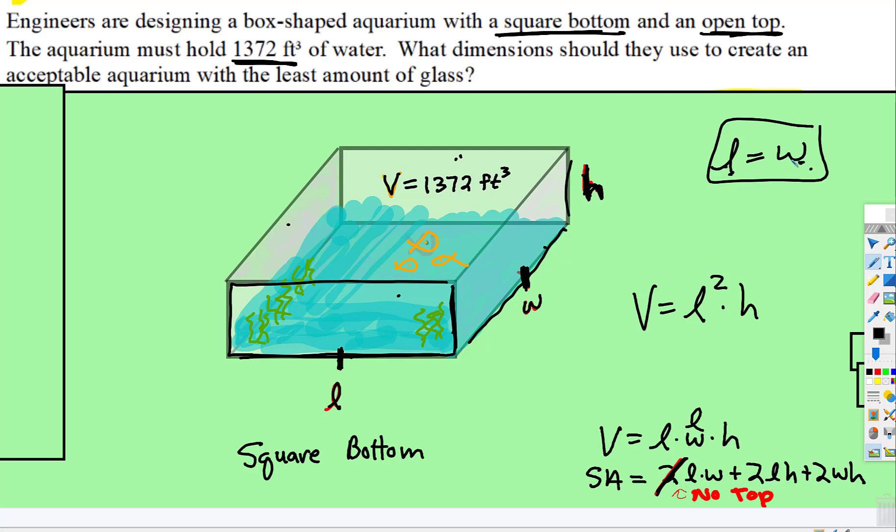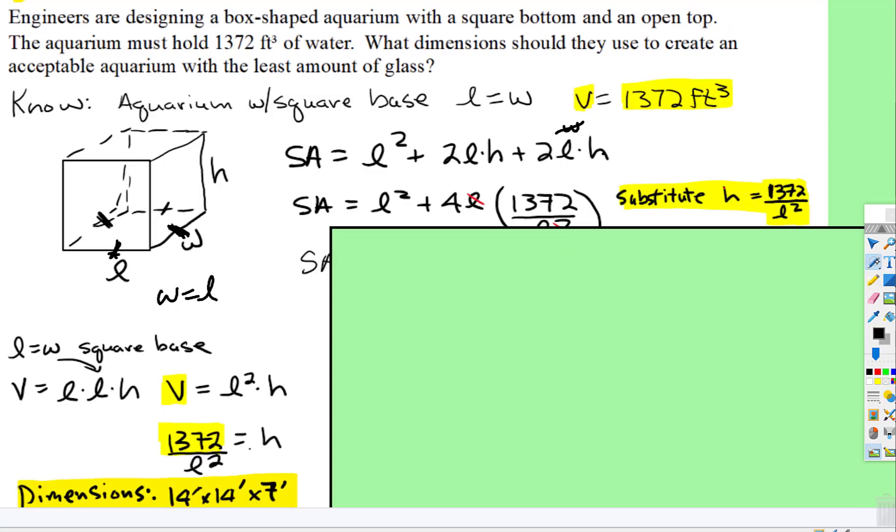But remember, length is equal to width, so instead of W there, we can put an L. Oh, and look, now we have an L times H here and an L times H there. We can add those two things together. Here's our diagram. Here we have our surface area formula with the L and the W's, the W's being swapped for the L's. And then I'm going to simplify, because now those two things can be added together, so it's L² plus 4LH.